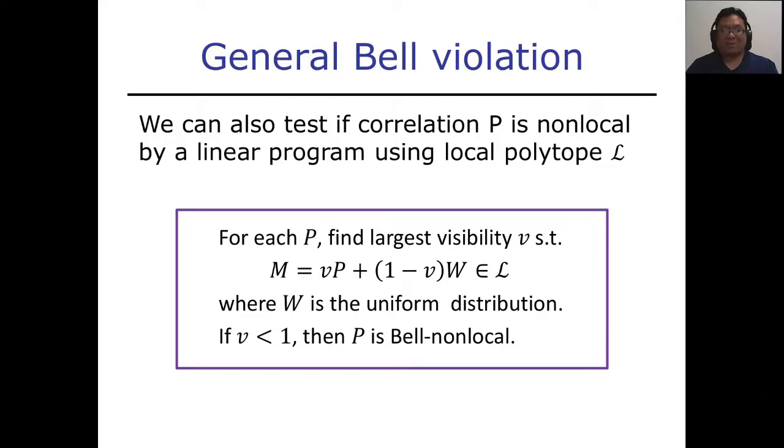However, you don't actually need to choose a particular Bell inequality. If you know the extreme points of your local set, then it's possible to test whether a correlation is going to violate the Bell inequality or not just by running some linear program. So the linear program tries to mix your correlation with a uniform distribution, and the largest possible weight determines whether it's non-local or not. If this weight is less than one, then we know that the correlation must be non-local.